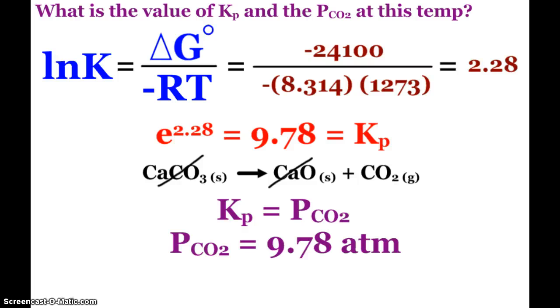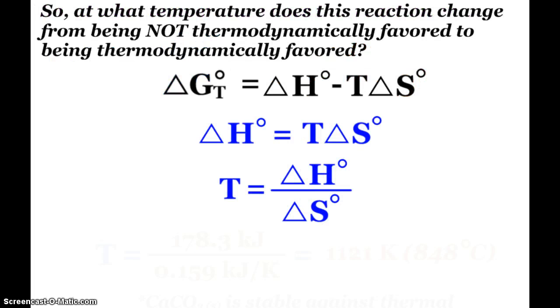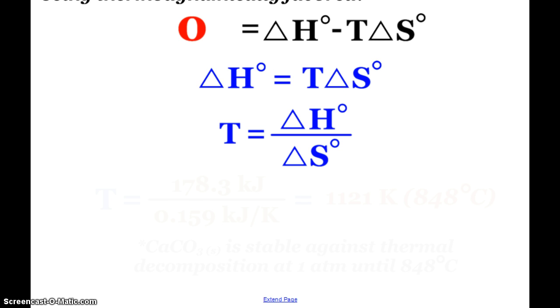So what temperature did this reaction magically flip? At 25, it was non-favored. At 1,000, it was favored. So what temperature did it switch? I can find that out because at that point, my delta G is equal to zero. And so I can rearrange my equation, and I can eventually set it up so that to find the temperature at which a reaction will flip from being favored to not being favored, or vice versa. You simply take delta H divided by delta S.